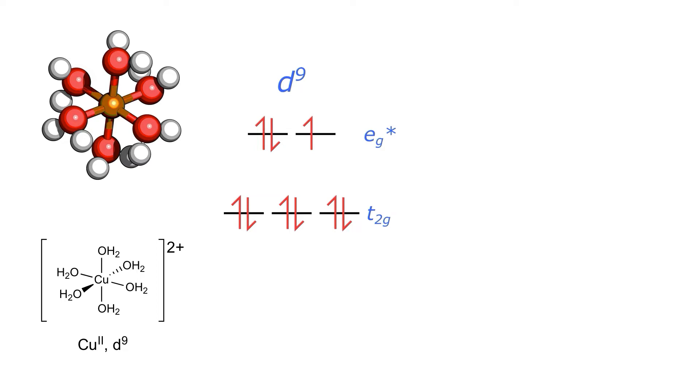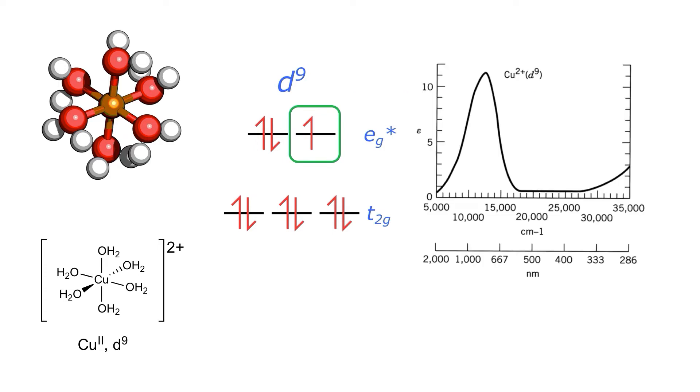When we have a d9 complex like this, it soon becomes apparent that there is only one open space in the d orbitals. A d9 complex spectroscopically should be identical to a d1 complex since there is only one transition possible because there is only one space for the electron. When we look at the absorption spectrum of copper 2 in aqueous solution, there is one band around 900 nanometers. However, in this band we can clearly see a split which indicates that there are two transitions under the curve.